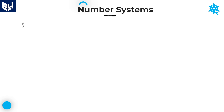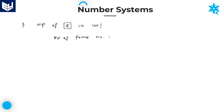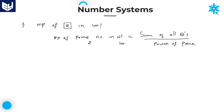Let's see the first problem. I will explain the problems with big numbers. First one is: find the highest power of 2 in 100 factorial. The first and foremost point you must keep in mind is that whatever number is given, that particular number must be a prime number. Here, 2 is a prime number, so we don't have any problem. As we all know, the highest power of prime number in n factorial is equal to the sum of all the quotients when n is successively divided by powers of the prime number. Here, the prime number is 2 and the value of n is 100.